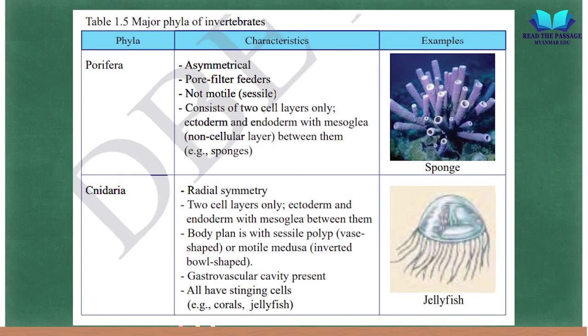Table 1.5 — Major Phyla of Invertebrates. Porifera: asymmetrical, filter feeders, not motile (sessile), consists of two cell layers only (ectoderm and endoderm with mesoglia between them); example: sponges. Cnidaria: radial symmetry, two cell layers (ectoderm and endoderm with mesoglia), body plan with sessile polyp (vase-shaped) or motile medusa (inverted bowl-shaped); gastrovascular cavity present; all have stinging cells; examples: corals, jellyfish.